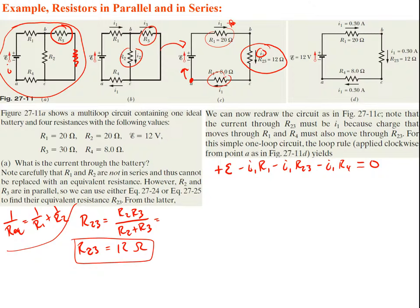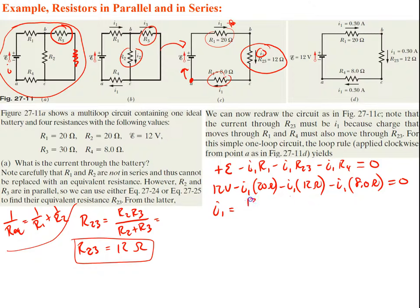Plugging in the known values: 12 volts minus I1*(20 ohms) minus I1*(12 ohms) minus I1*(8 ohms) equals zero. Pulling out I1 and simplifying: I1 = 12 volts / 40 ohms, which is approximately 0.30 amps. That is the current through the battery.